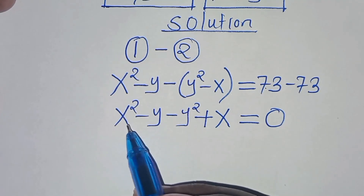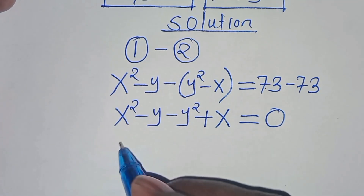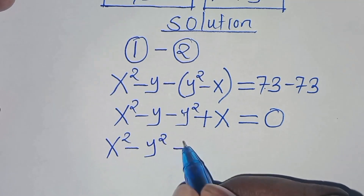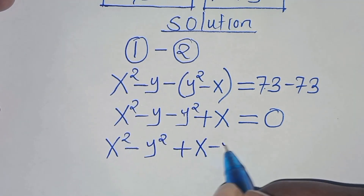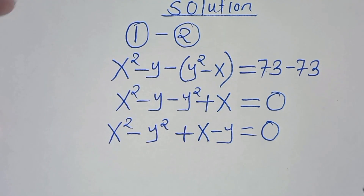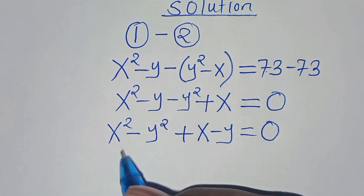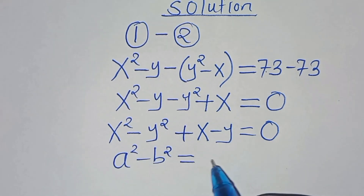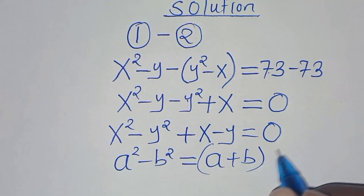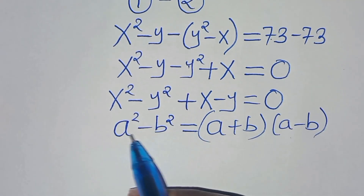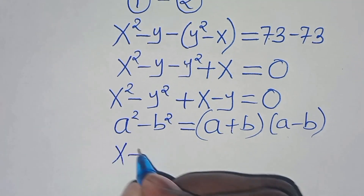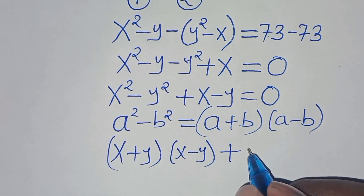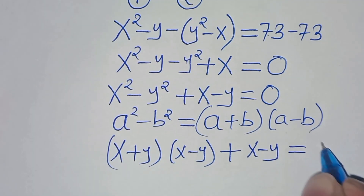So the next step from here, we can group this. We have x squared and y squared here, so we have x squared minus y squared, then we have plus x, then minus y, this is equal to 0. So x squared minus y squared is in the form of a squared minus b squared. This is the difference of two perfect squares, which we can express as a plus b, then a minus b. Now applying this identity, here we have x plus y, then x minus y.